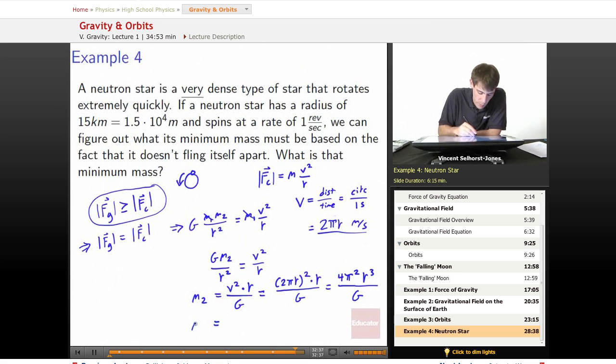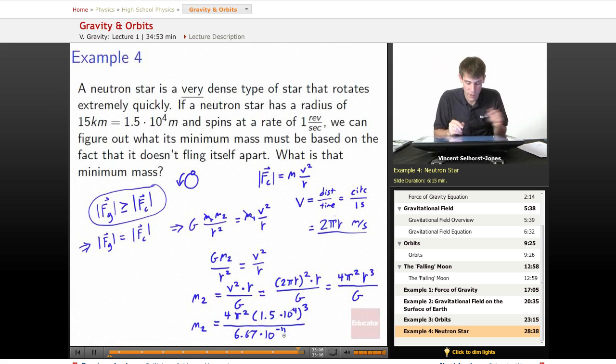We plug in a bunch of numbers, all those numbers that we have. So 4 pi squared, what's r? The radius is 15 kilometers, so 1.5 times 10 to the fourth. Now it's not just squared, it's not to the 1, it's cubed. We divide this whole thing by G, or 6.67 times 10 to the negative 11th.